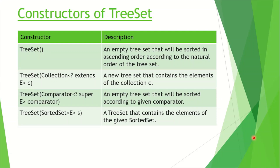Now let's see the different types of constructors supported in TreeSet. The first is the default constructor which creates an empty TreeSet sorted in ascending natural order — for numbers that would be 1, 2, 3, 4. The second expects a Collection argument and creates a TreeSet containing elements of that collection. The third expects a Comparator argument and creates an empty TreeSet ordered by that comparator. The last expects a SortedSet argument and creates a TreeSet containing elements of that sorted set.